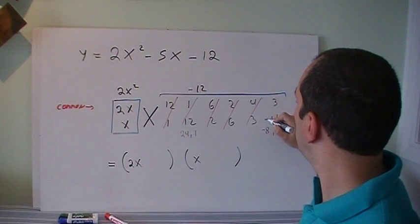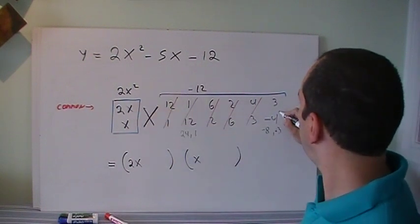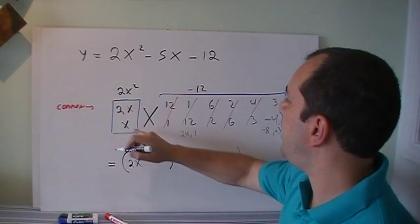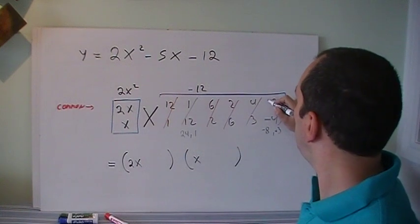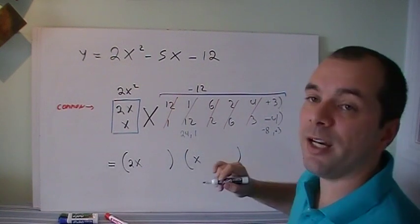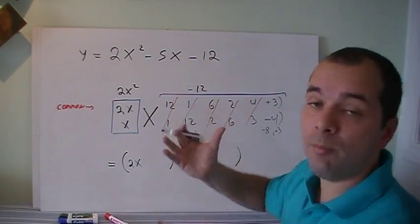I'll get it from here. 2 times minus 4, so that's my answer. And x times positive 3 gives me the other one. And now I made everything.